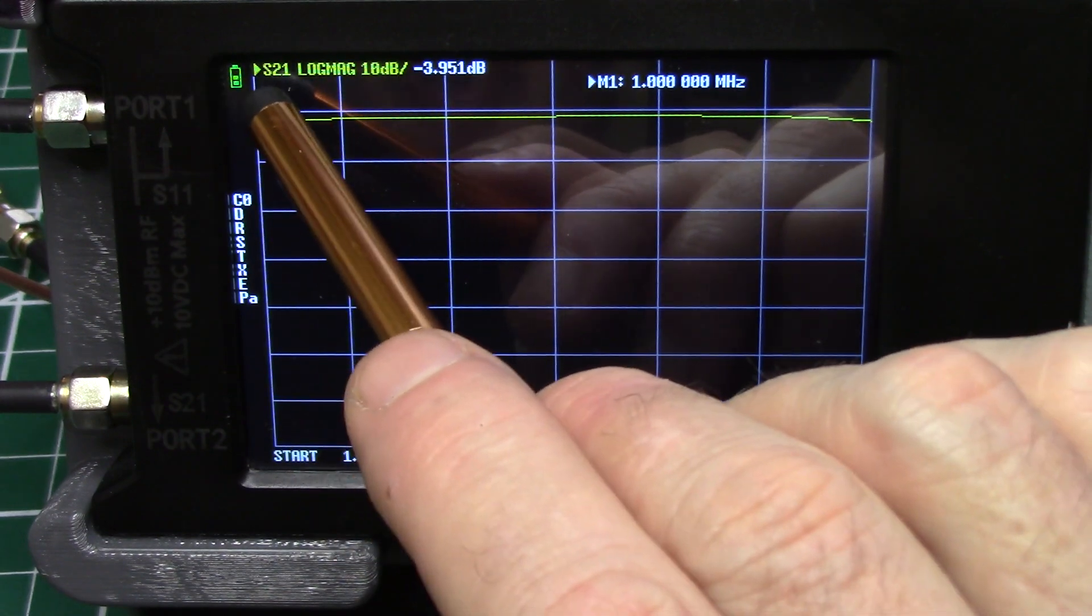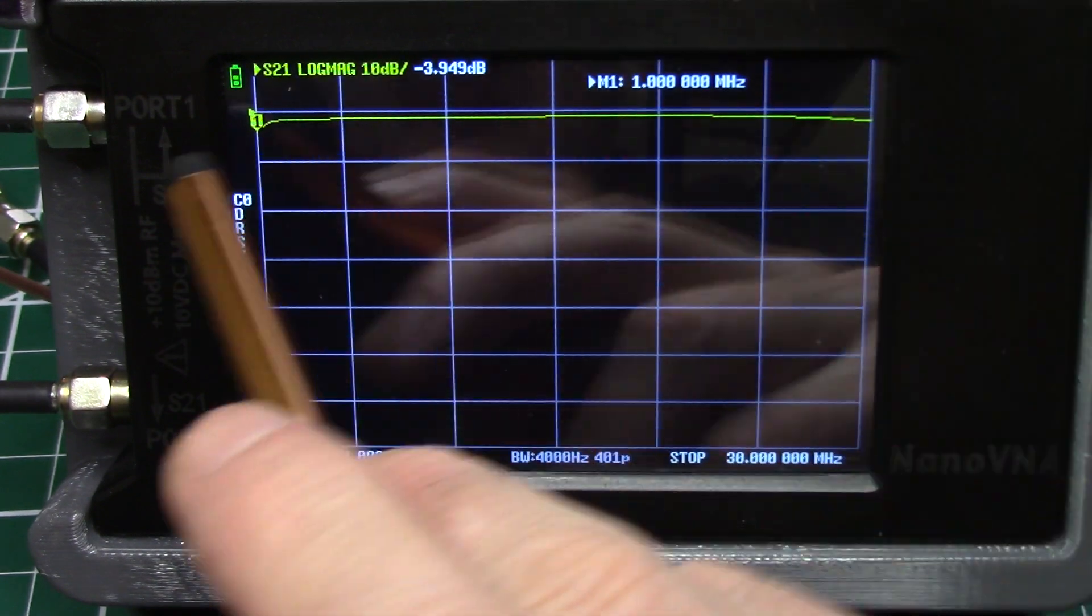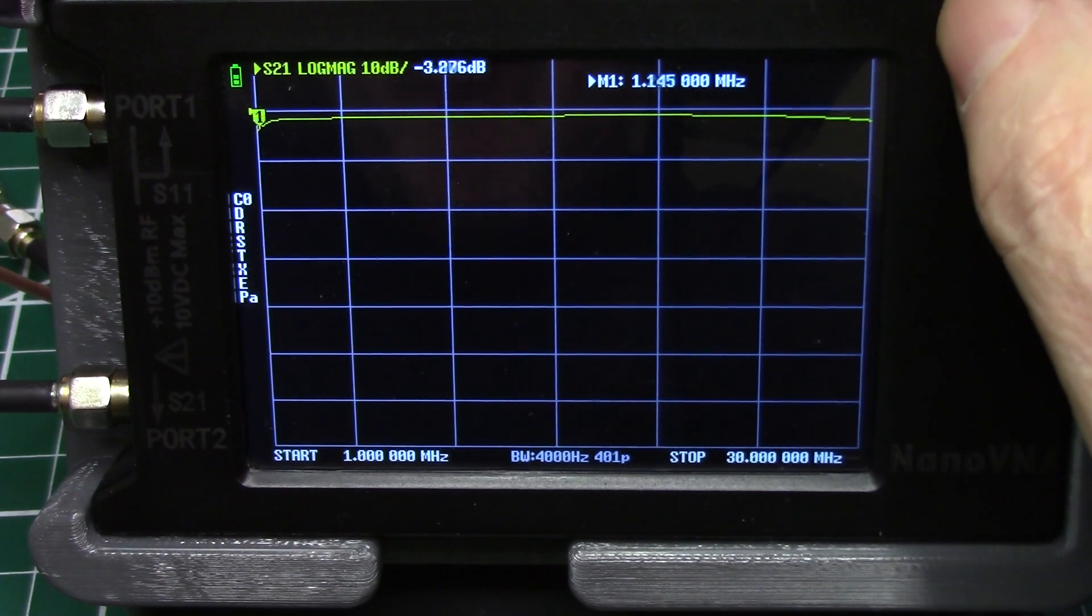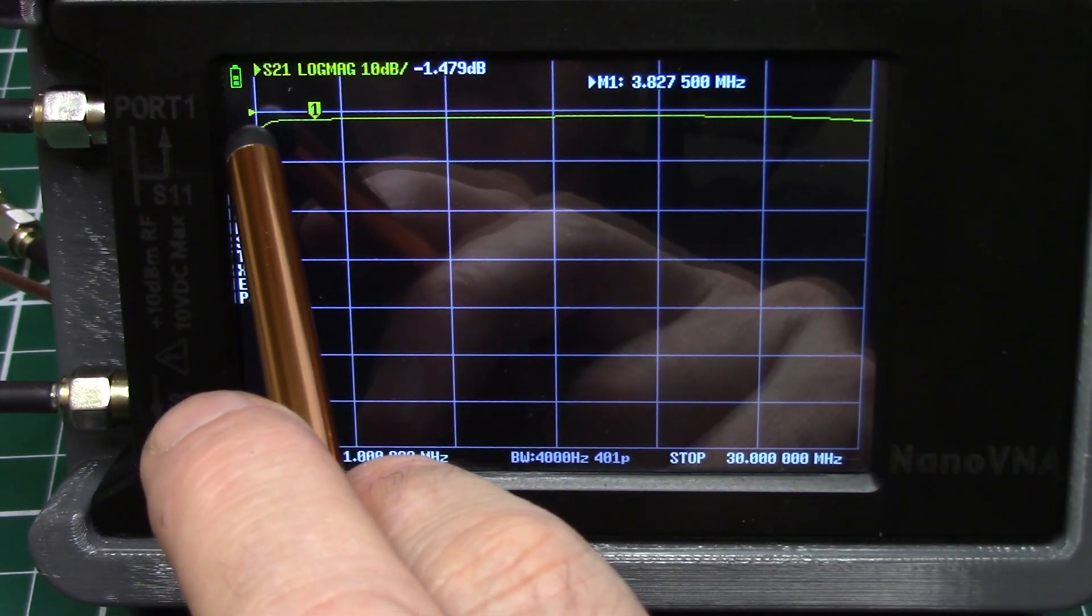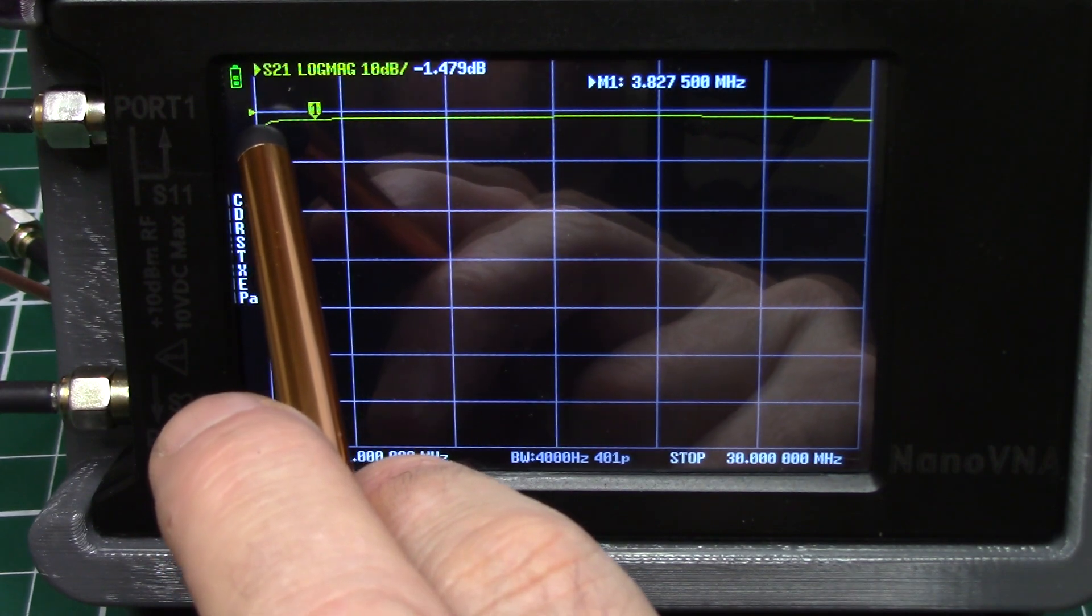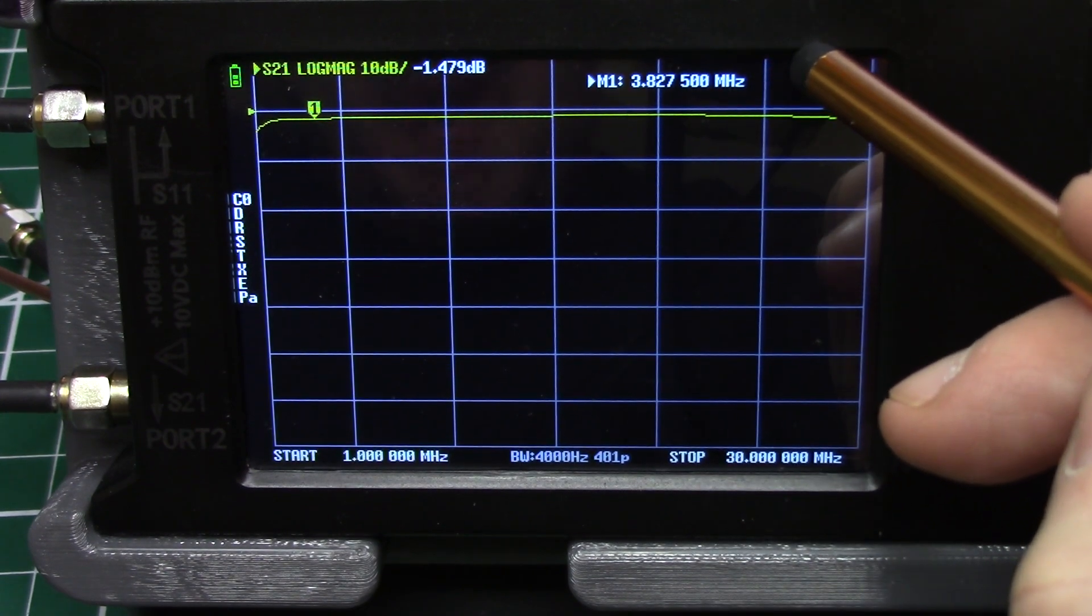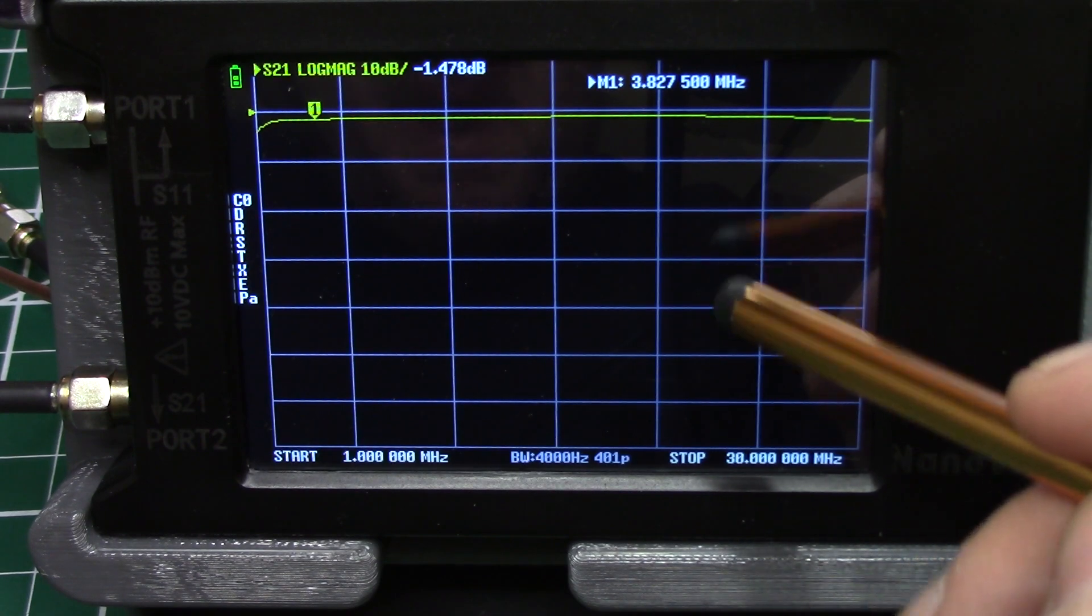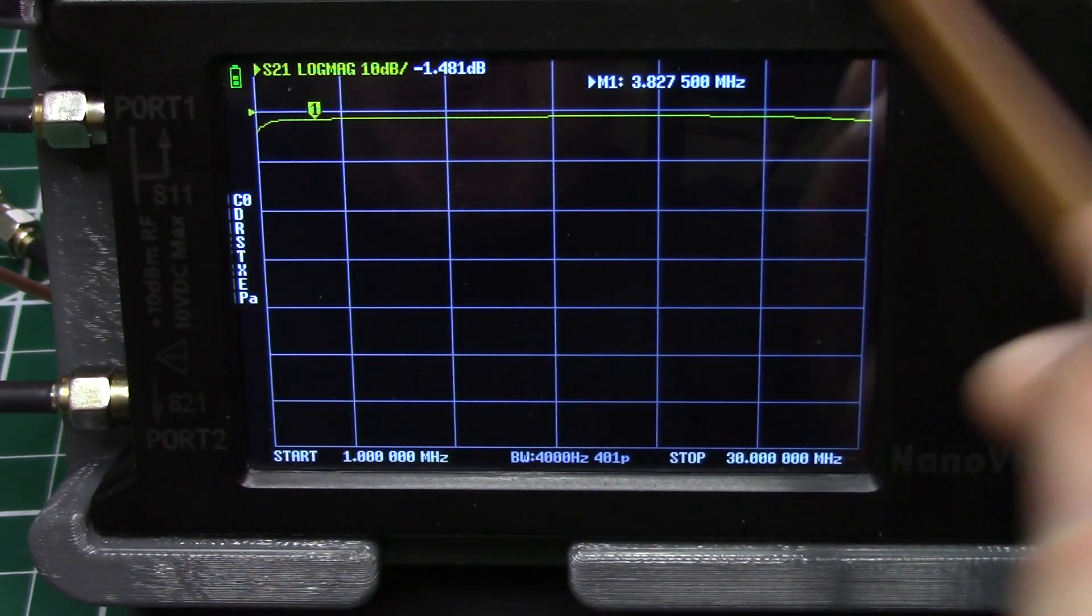You can see right here it says S21 log mag. This is 10 dB per division. You may be able to see right here. I'll move this marker out of the way. You see this little yellow pointer right here, this little yellow diamond. That's your zero line. And the line above is plus 10 and then it goes down by 10 dB for each division you go down. But that's the zero line.